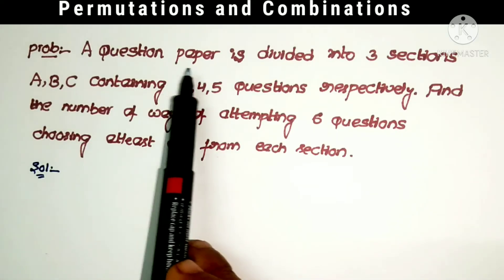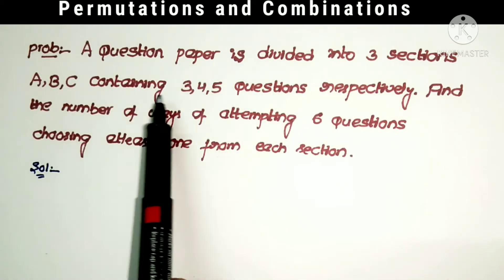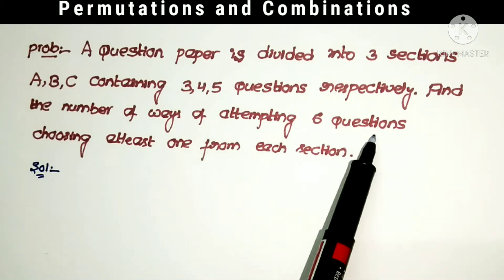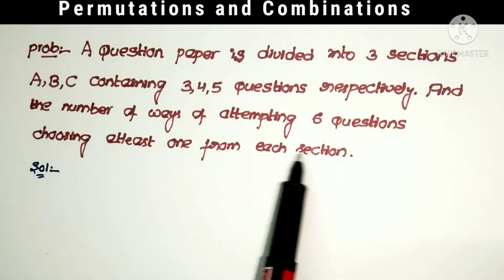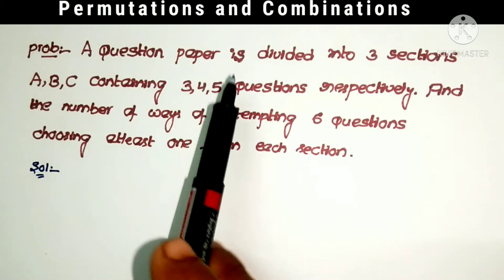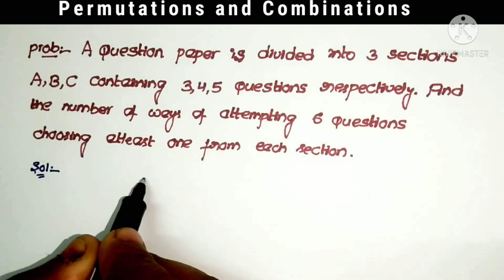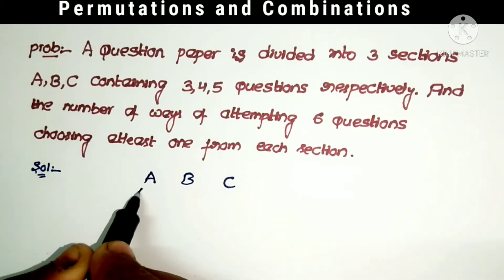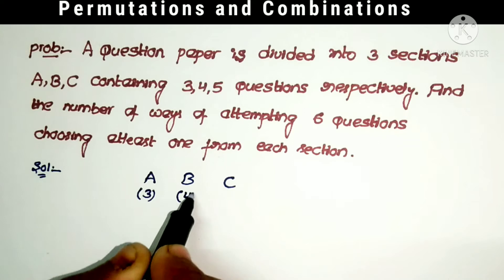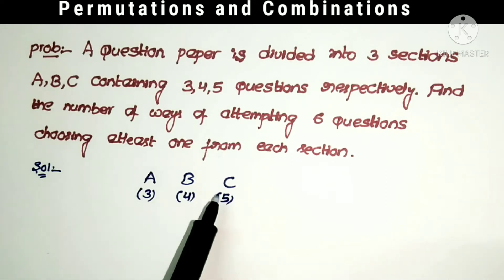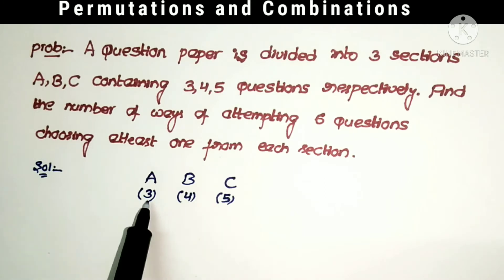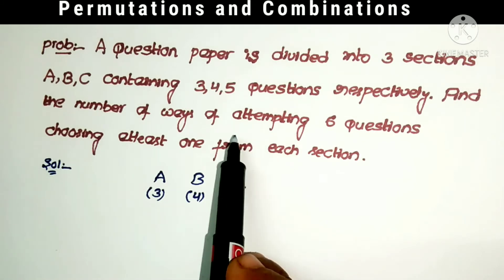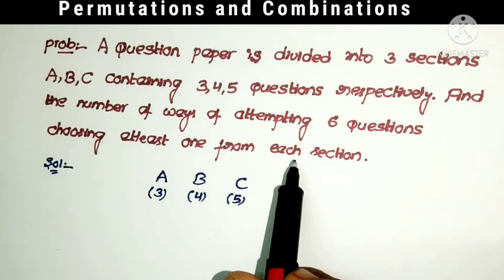First problem: a question paper is divided into three sections A, B, C containing 3, 4, and 5 questions respectively. Find the number of ways of attempting 6 questions choosing at least one from each section.